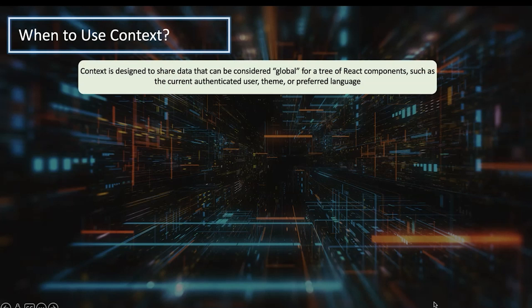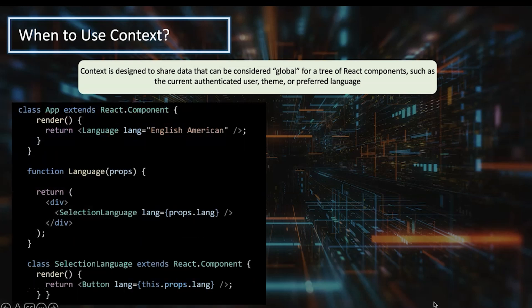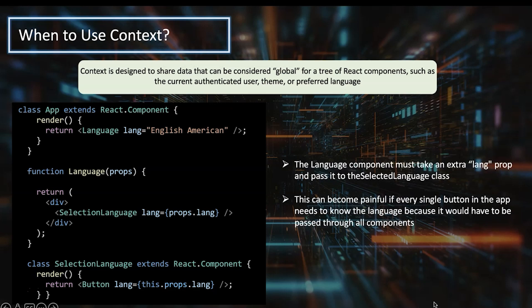Context is designed to be considered as a global state which any component in the component tree can get directly from its parent without involving any middleware. For example, we have an app component with a language function and a select language component. The language component needs to take an extra prop called 'lang' and pass it to the selected language. This becomes further painful when every single button in the app needs to know the language and pass it to other components.